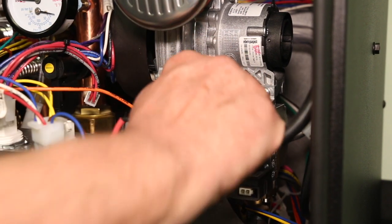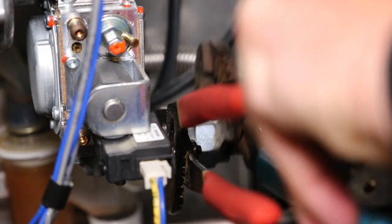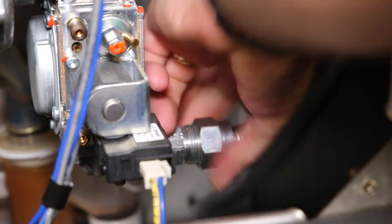First, disconnect the air-proving switch tube from the gas valve. Next, remove the flexible gas line from the gas valve. Be sure to use a wrench to back up the gas valve while removing the gas line.